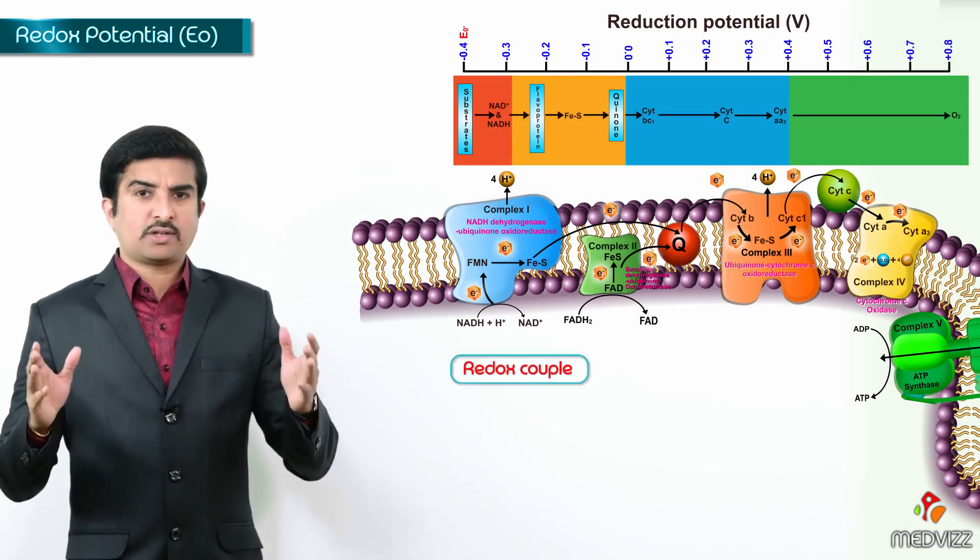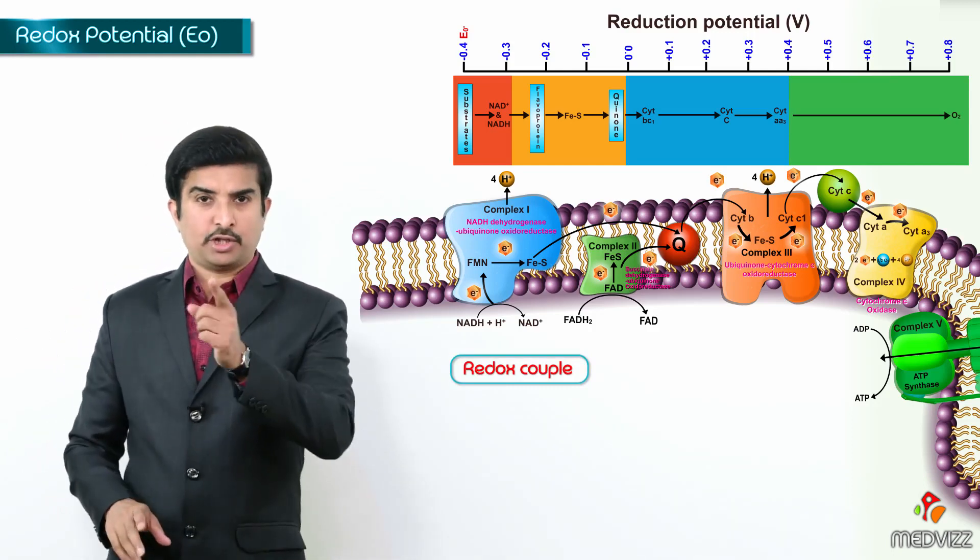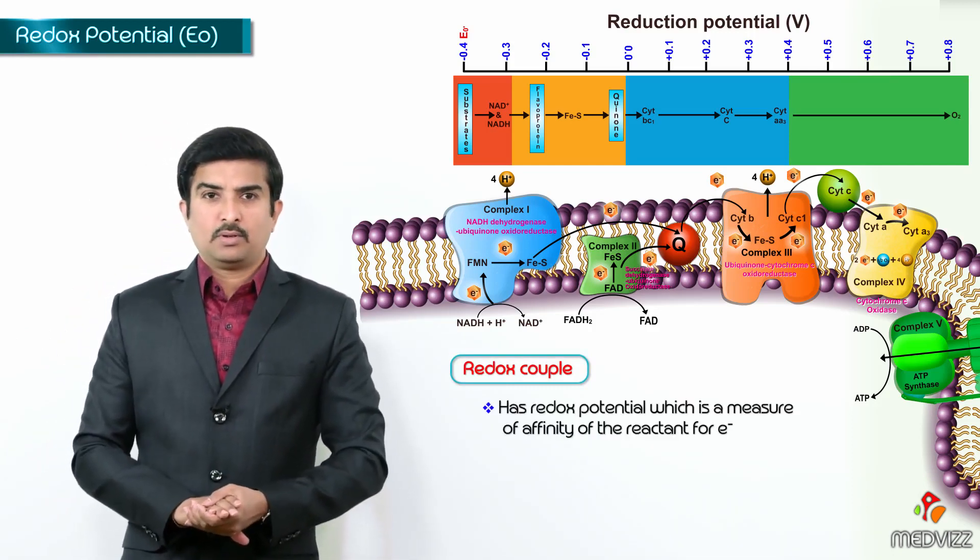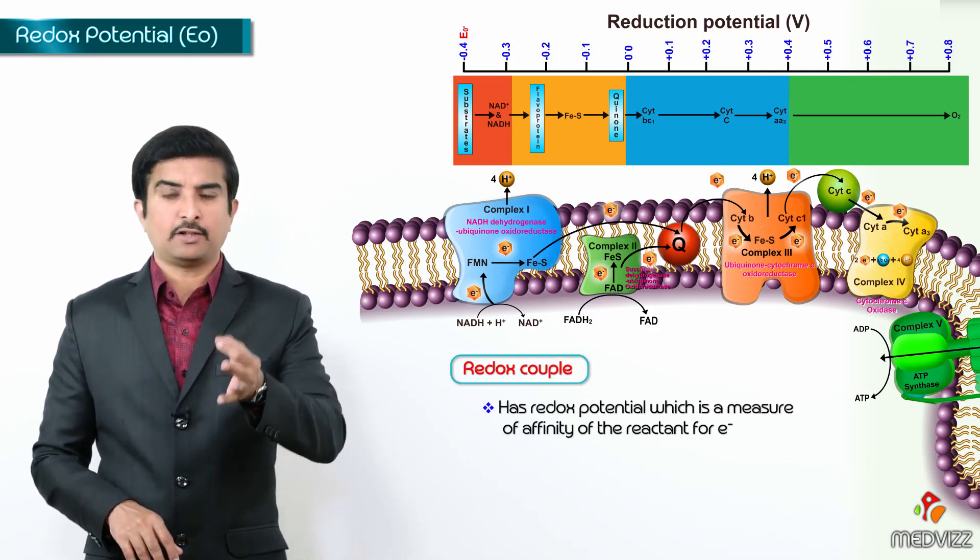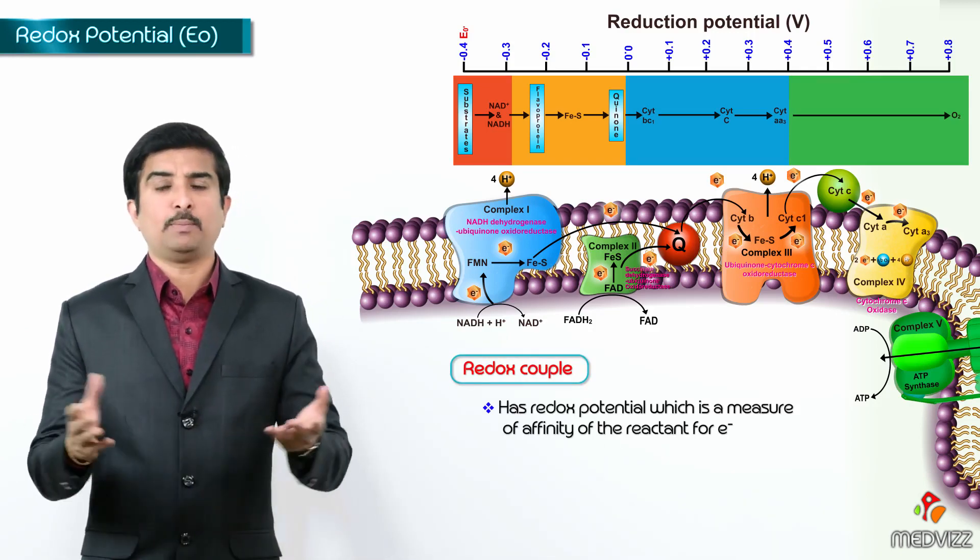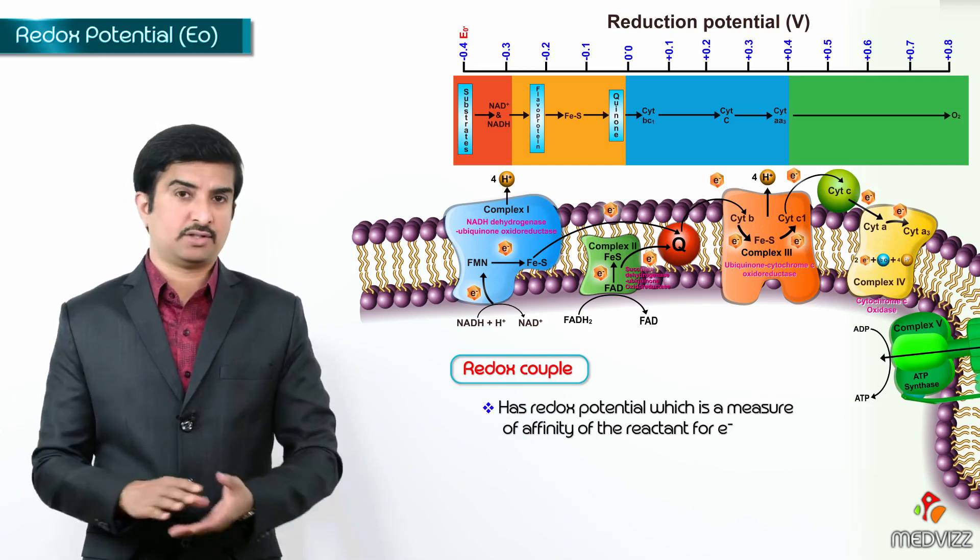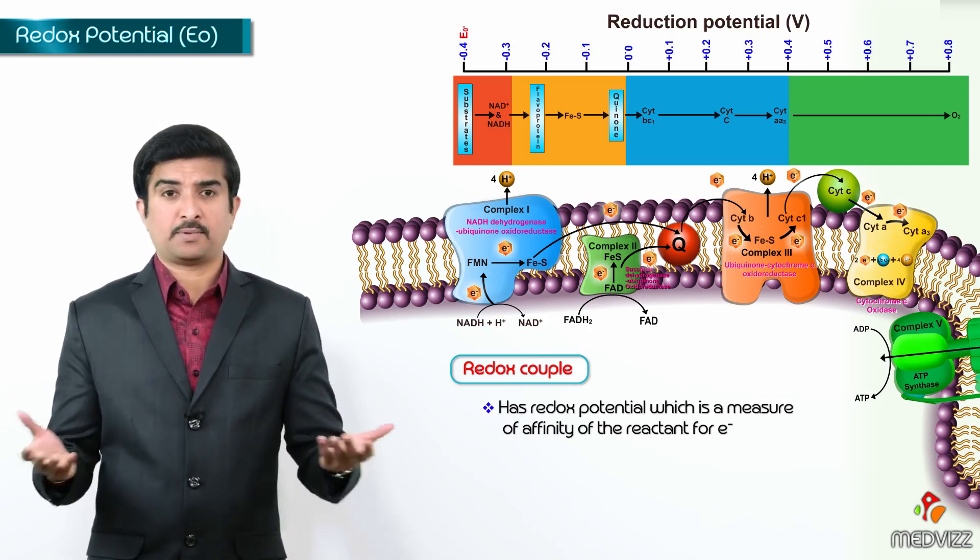And every redox couple has a redox potential which is a measure of the affinity of the reactant for electrons. It may not be the same for every reactant. It may differ from substance to substance.